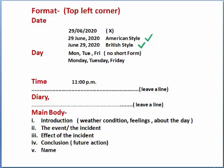After writing about the effects, you should write the conclusion. In the conclusion, you should write about your future action or future plan. One very important thing is that you should start writing the conclusion from a new line. After the conclusion, you should write your name. At this point, there is no need to write your full name, because diary entry is a private or personal matter.